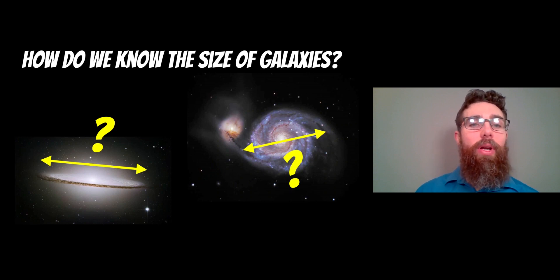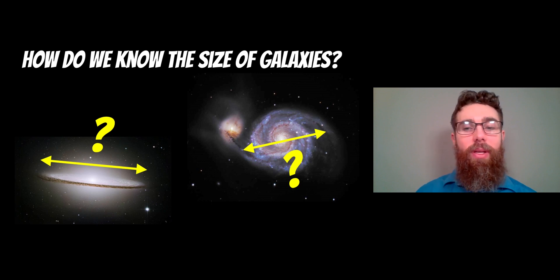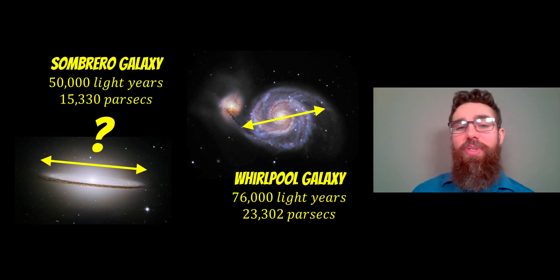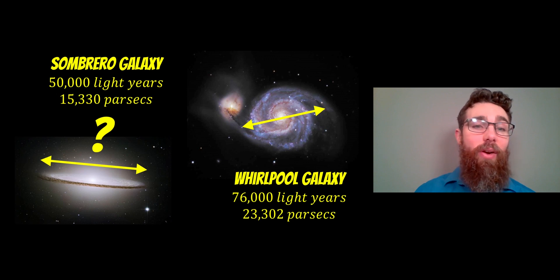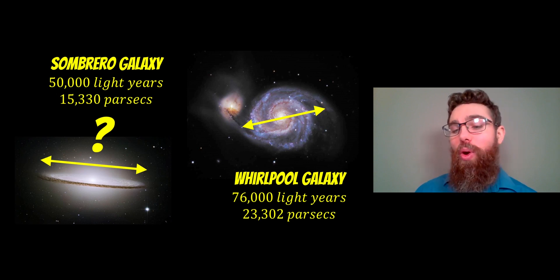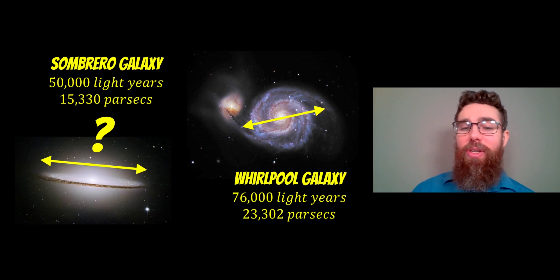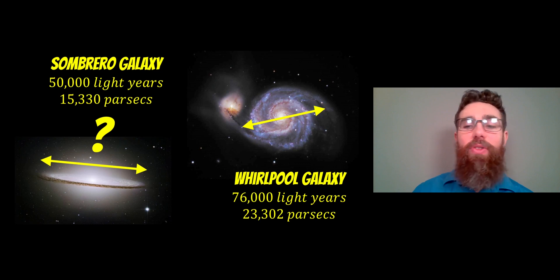Welcome to this video where we're going to look at how we find the size of galaxies. If you look up any galaxy, it'll be given some size or diameter. Two examples are the Sombrero galaxy, which is about 50,000 light years in diameter, and the Whirlpool galaxy, which is about 76,000 light years. But how do we actually get that diameter?